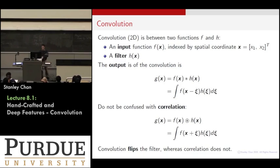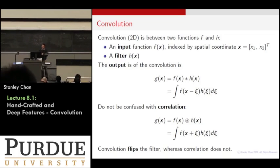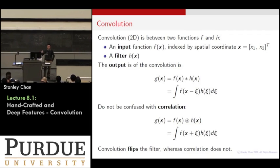This lecture will be more geared towards computer vision because all these convolutional architectures were originally developed for computer vision. Another area that has been using a convolutional-type approach a lot is natural language processing. But beyond that, if you try to apply this to medical data, that kind of convolutional architecture may not be the right fit. So let's focus today on computer vision type applications.